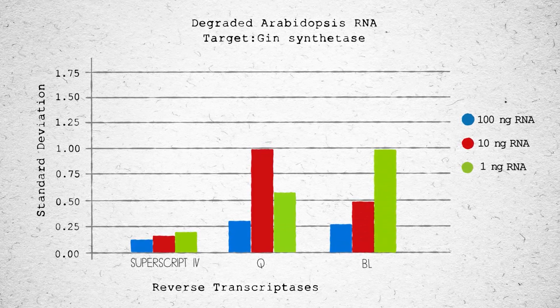The ability to start with less input RNA is critical, especially when working with RNA isolated from a single cell or from FFPE tissue samples. The new superscript 4 RT is capable of reproducible cDNA synthesis from a wide range of RNA concentration, which makes it a superior choice for your RT-qPCR.